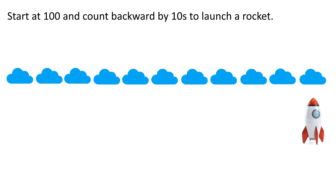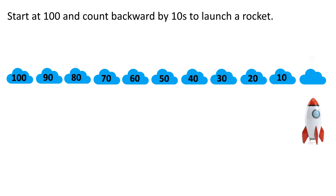Start at 100 and count backward by 10s to launch a rocket. 100, 90, 80, 70, 60, 50, 40, 30, 20, 10, 0. Blast off!